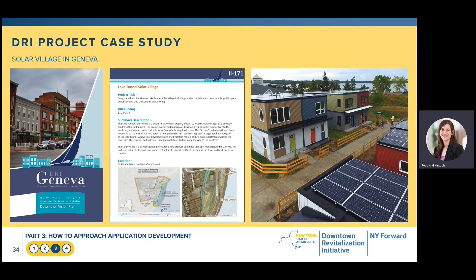This slide provides an example of a successful project from DRI Round 1: the Solar Village project in the City of Geneva. The goal of Solar Village was to create energy-efficient micro apartments, public space improvements, and emphasize green manufacturing. The project was initially identified as part of the DRI strategic investment plan back in 2017. Applications are not required or expected to develop projects to this level of detail — the example shown is a final strategic investment plan, not an application requirement.